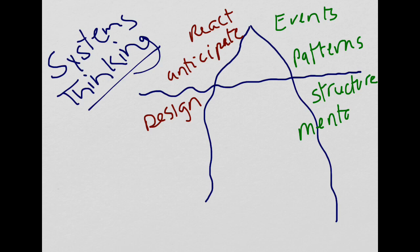Underlying the structures are mental models. Mental models are the attitudes, biases, beliefs, and assumptions held by the people who designed the system in the first place.